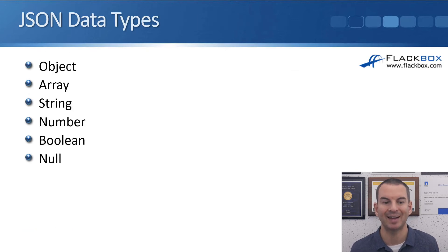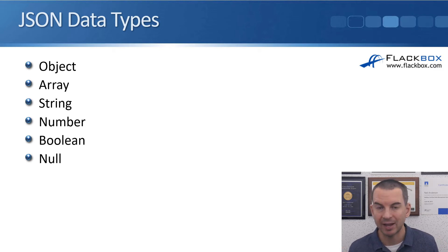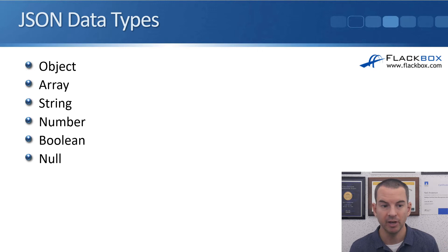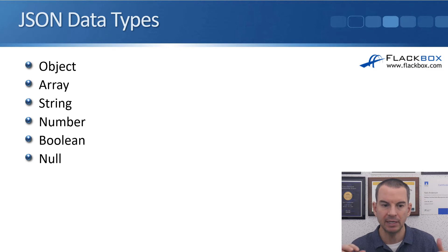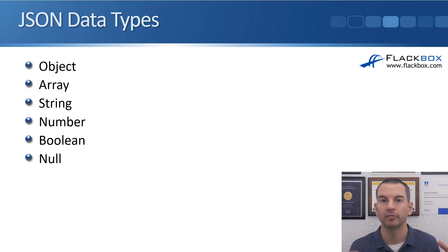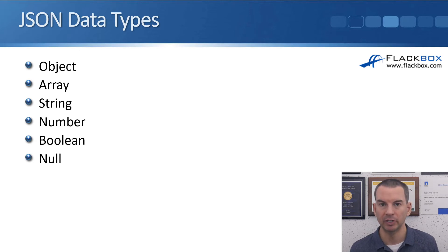The different data types in JSON are: object, array, string, number, boolean, and null. I'll be explaining each of these as we go through the following slides.